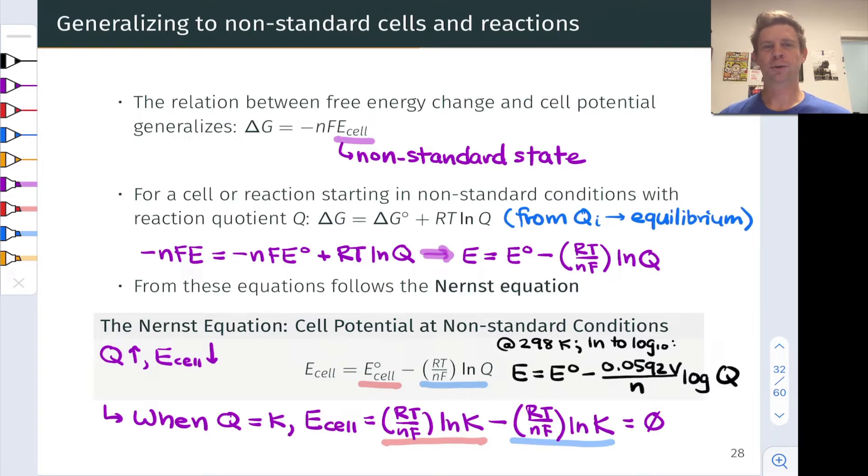To close this section, we're going to talk about what is, to me, one of the most beautiful applications of electrochemistry, and it's rooted in a deep appreciation of the Nernst equation and the way we can use the reaction quotient to modulate cell potential.